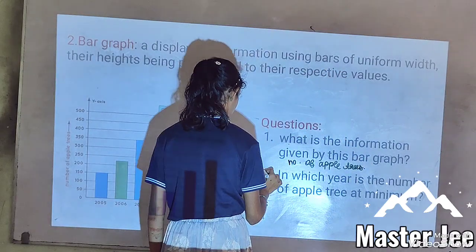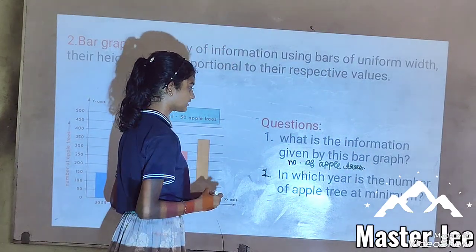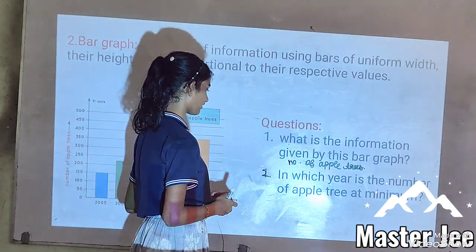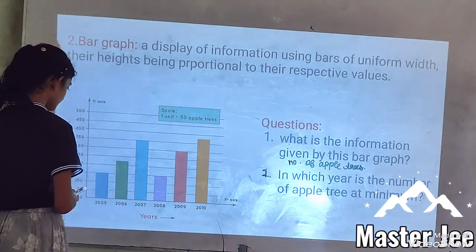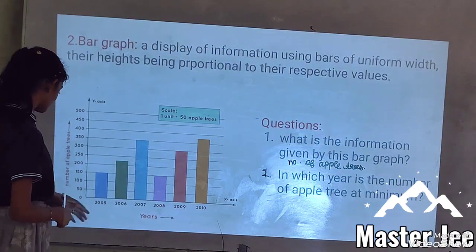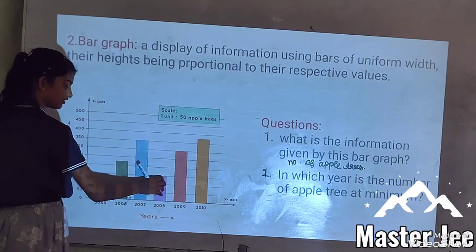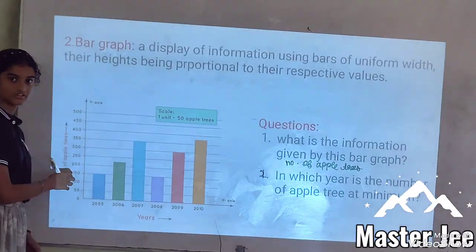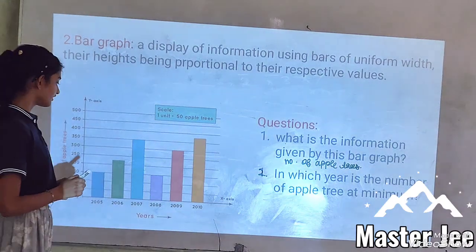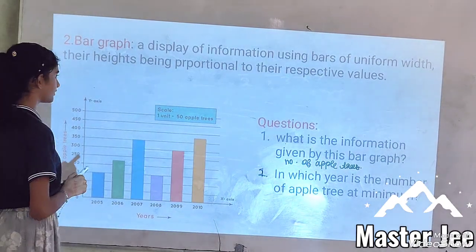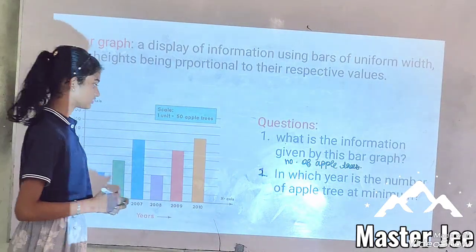Question number two: Which years have equal numbers? The years 2000 and another year are equal in height, meaning they have the minimum equal value.